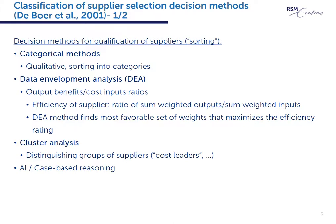Categorical methods are basically qualitative models. Suppliers are evaluated on various criteria on ordinal scales, for instance positive, neutral, and negative. In the end, suppliers are given an overall rating using the same categories. In the qualification process, categorical methods are the most popular methods in practice.